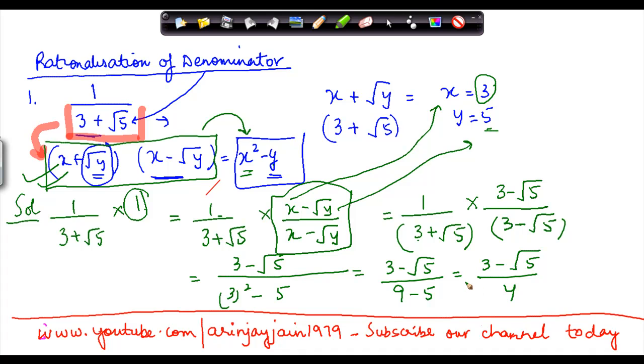So I have simplified this and now I have 4 which is a rational number in the denominator. So basically I have rationalized the denominator from an under root number to a rational number. This is called rationalization of denominator and we will be seeing more problems on this in subsequent videos.